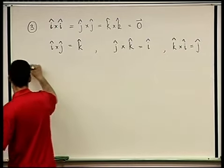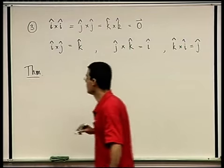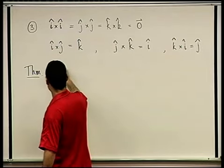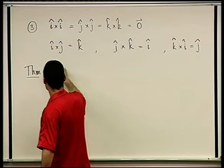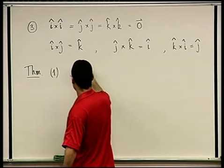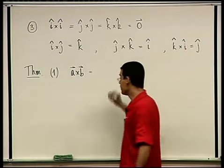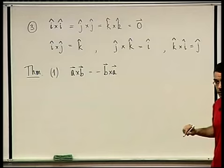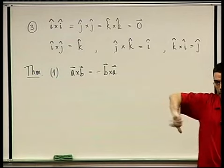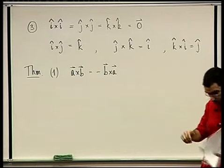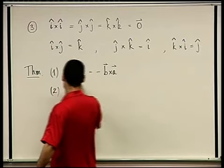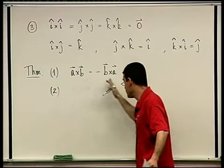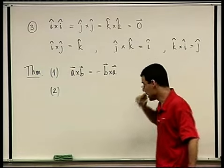Theorem: In general, A cross B is not equal to B cross A, but it always equals minus B cross A. It's a vector of the same length but in the opposite direction. The proof follows directly from the right-hand rule. So this product is not commutative.